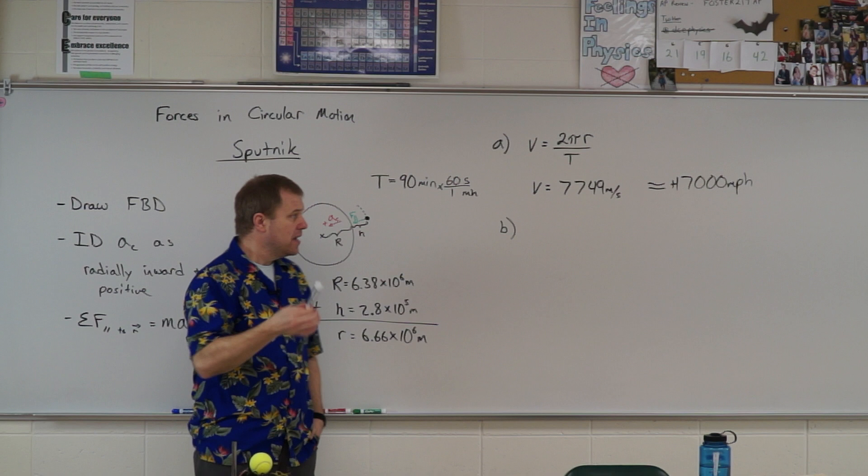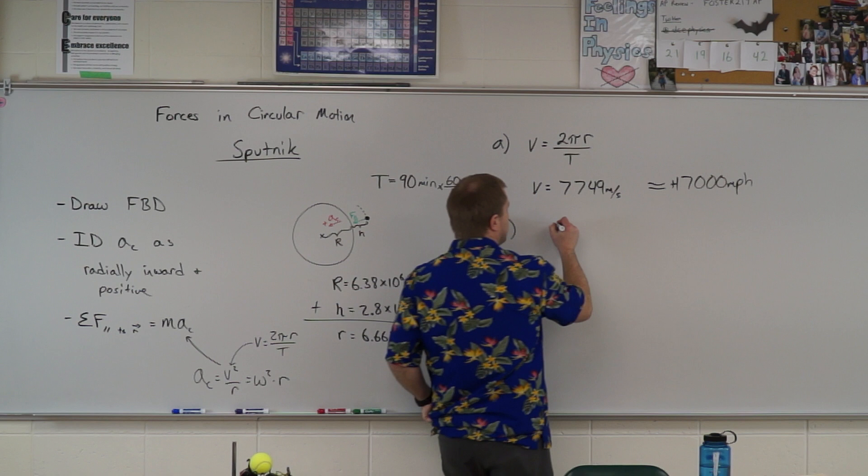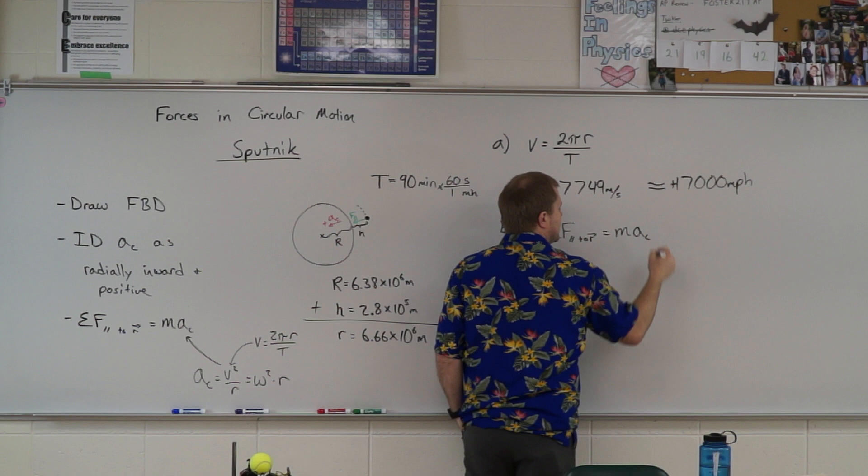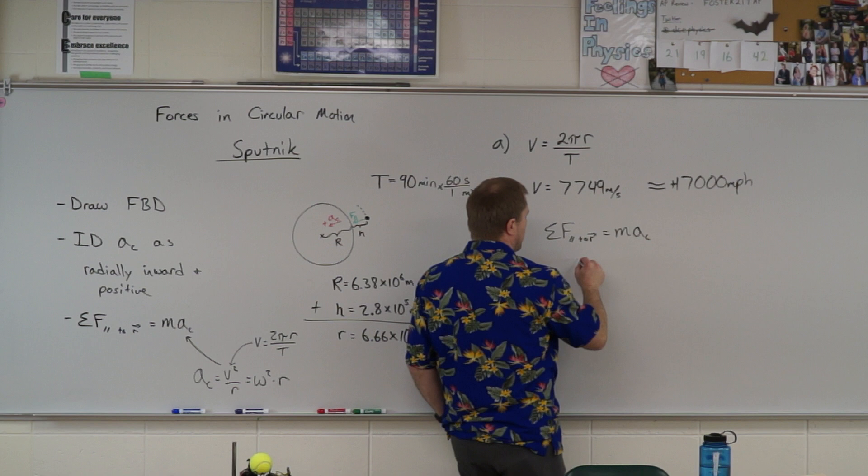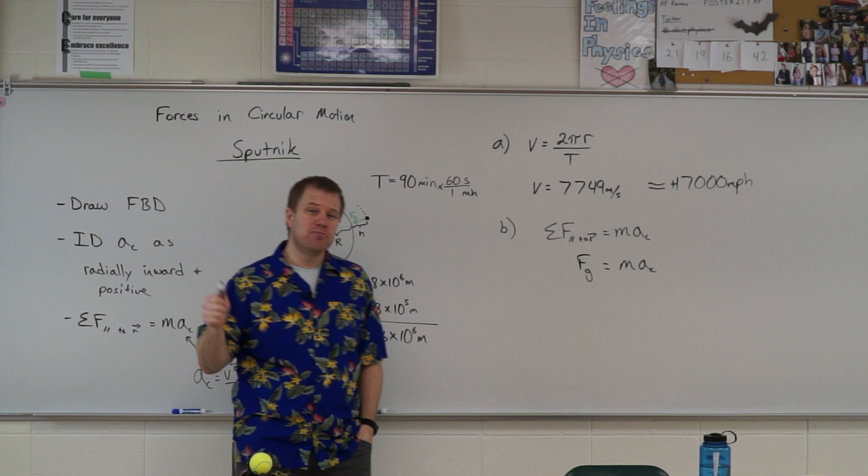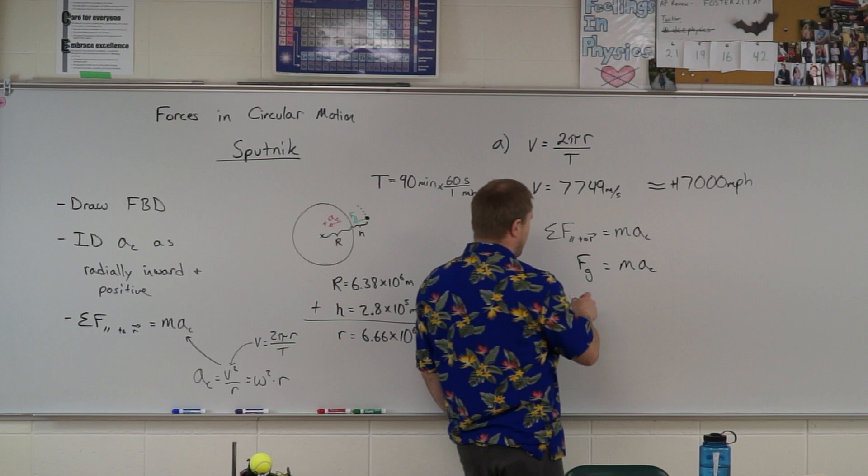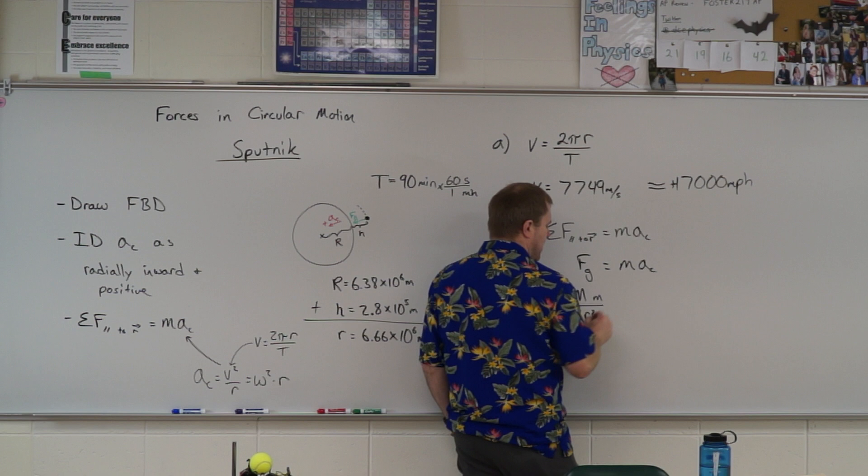So what we're going to do is we're going to set up our free body diagram. So I sum up the forces parallel to the radius set equal to MAC. Now the only force holding Sputnik in orbit here is the force of gravity. So force of gravity is going to be MAC. Now I can't just use MG here because we're not at the surface of the Earth. So I need to use that universal law of gravitation. So I got big G, the mass of the Earth, the mass of Sputnik divided by that radius squared is equal to the mass of Sputnik times the centripetal acceleration.